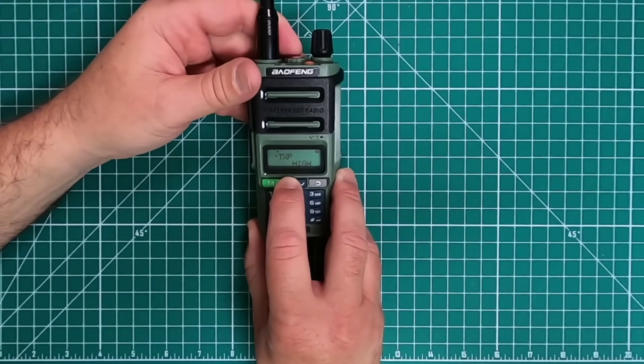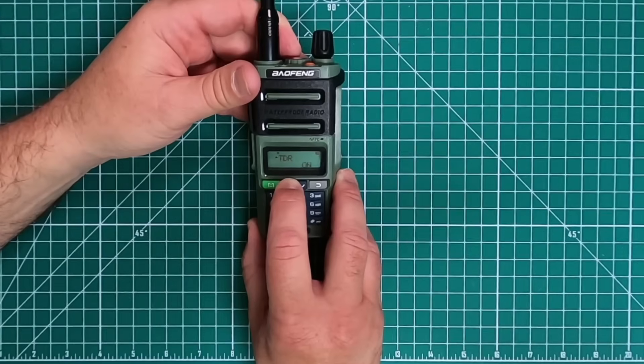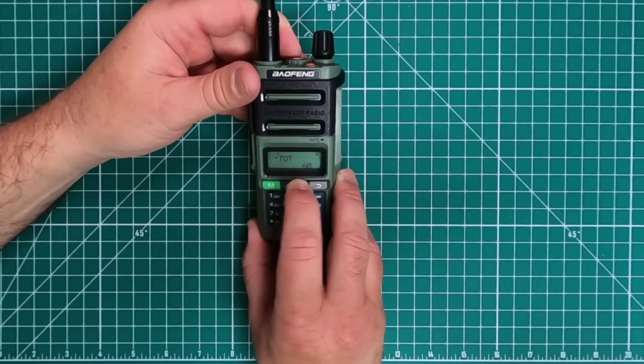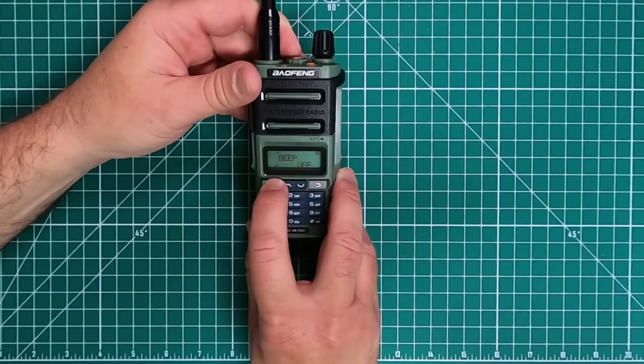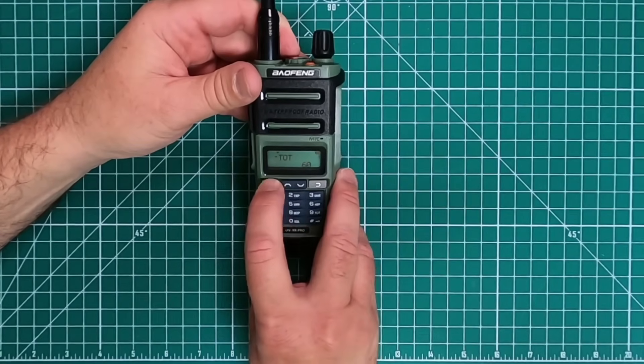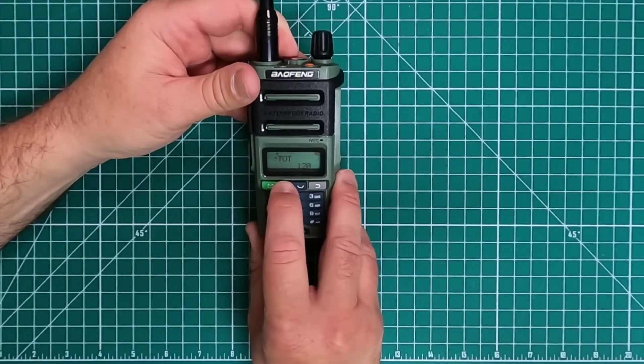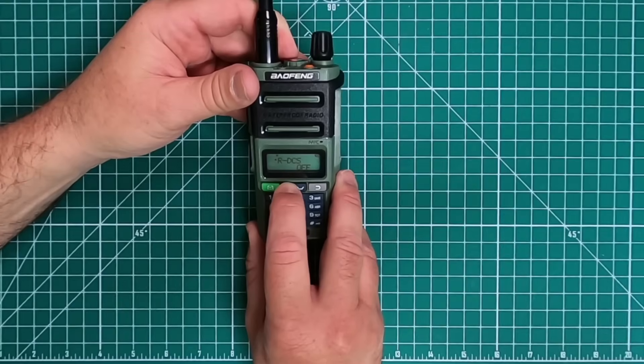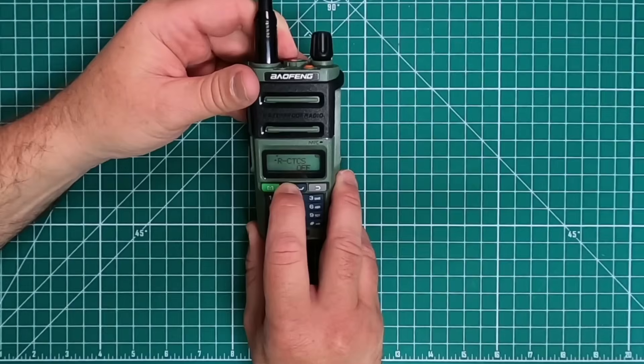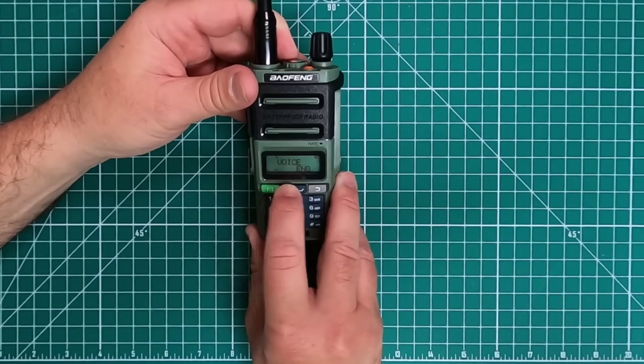You have your transmit power. And everything's pretty much the same in any UV5R. Turn the beep off. Timeout timer, I like to keep that at about 120 seconds. You have your DCCS or DCS for receive, receive CTCS, DCS for transmit, and then the CTCSS for transmit. Voice, you have your English, Chinese, and I'm going to set mine to off.